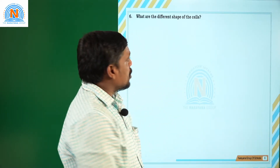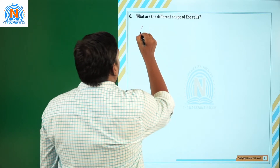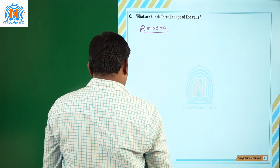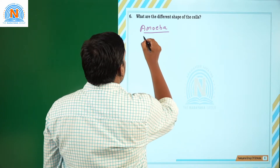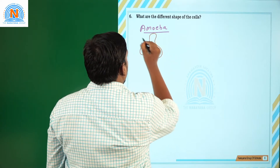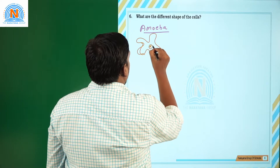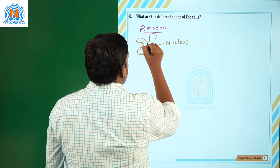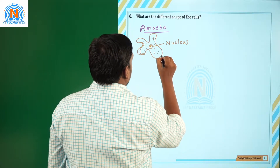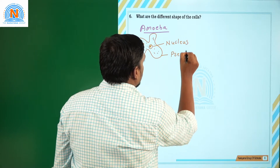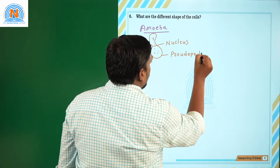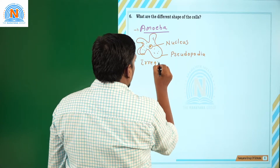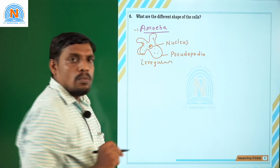Next question: what are the different shapes of cells? Take an amoeba — amoeba protease. It has an irregular body shape. Under the microscope, amoeba has a membrane-bound nucleus at the middle of the body with thick cytoplasm. With the help of special finger-like structures called pseudopodia, the amoeba moves from one place to another. So amoebas have an irregular body shape.